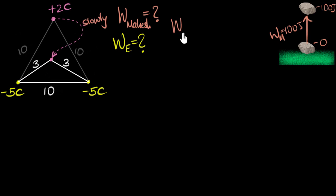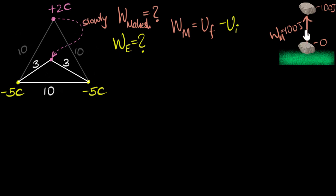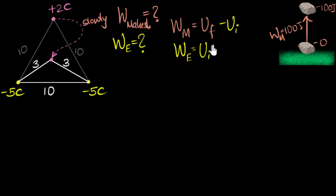So the work that I do equals the final potential energy minus the initial potential energy. And what about the work done by the electric field? Going back to gravity: when I'm pushing up, gravity is always putting a force downwards — opposite direction — so gravity is doing negative work. The work done by gravity would be negative 100. Same will be the case here: the work done by the electric field will be the negative of this, so that would be initial potential energy minus the final potential energy. Don't ever memorize this — always go back to gravity, take a simple case, and that will help.